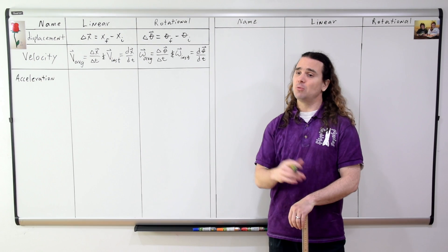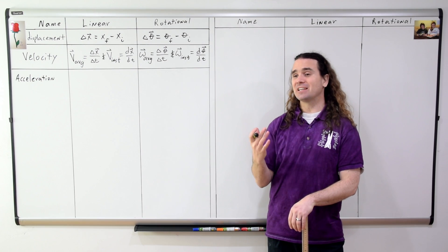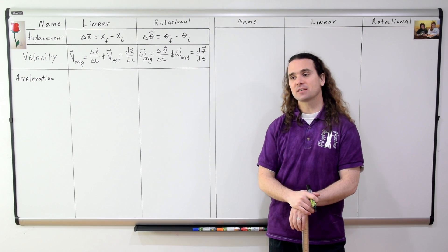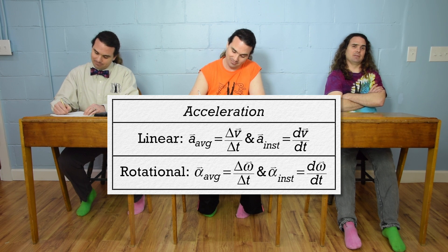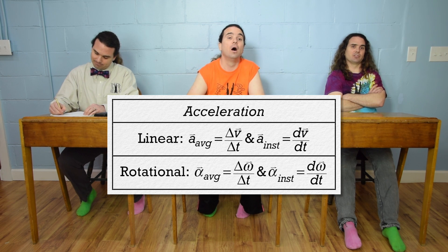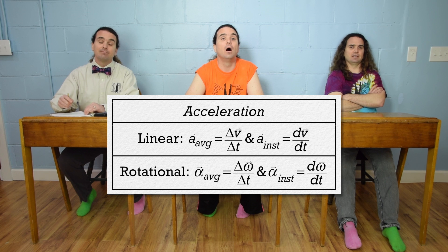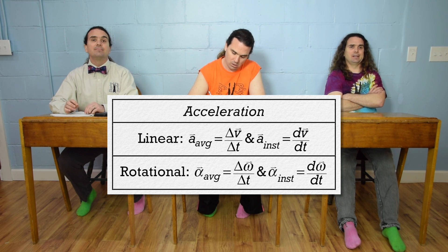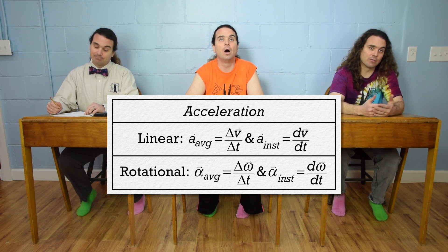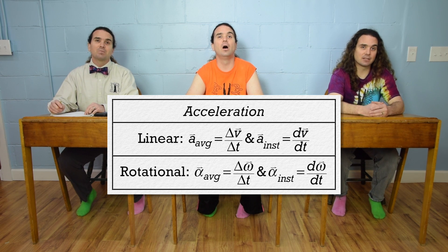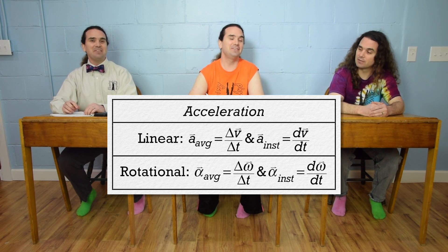Bo, please give me the equations for average and instantaneous acceleration. It is almost exactly what Bobby just said, only replace position with velocity. The acceleration is a vector, and the symbol for angular acceleration is alpha. However, some people like to call it the fishy thing!